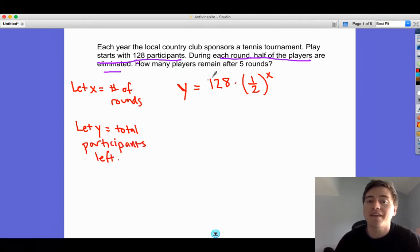That makes it easy because it asks how many players remain after five rounds. We know x is the number of rounds, so we put five in for that. Start with 128, find half five times. If you type that in a calculator, that tells you there's four players left.